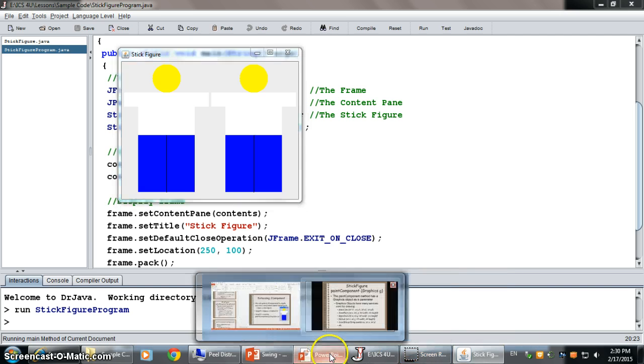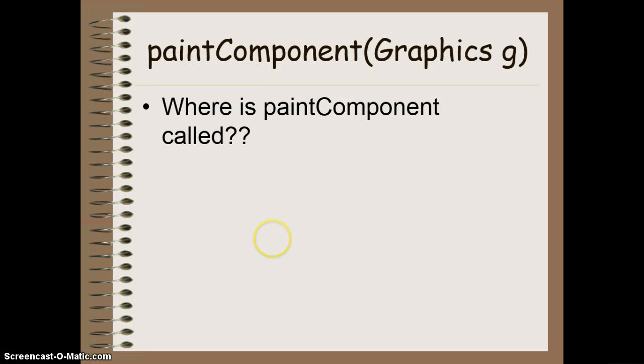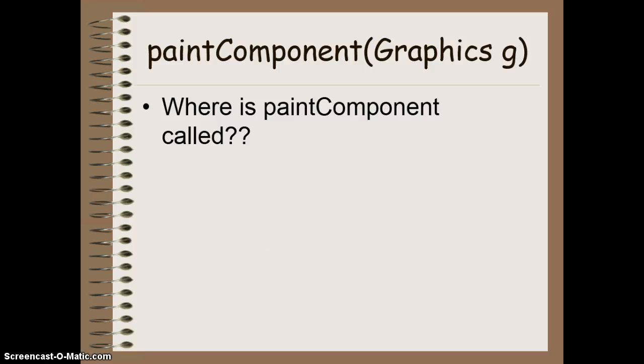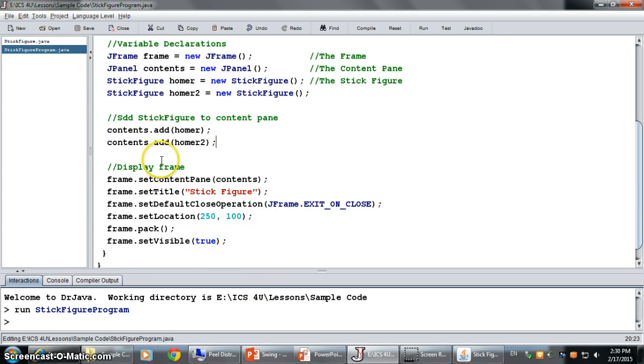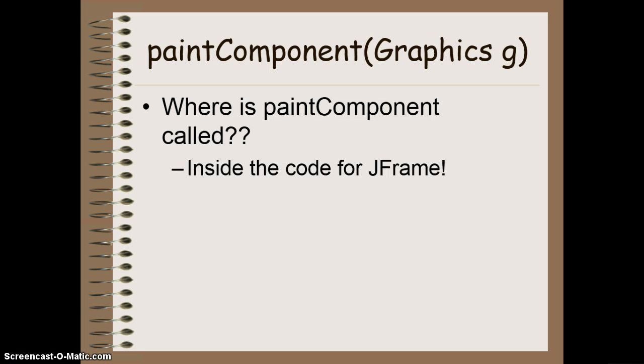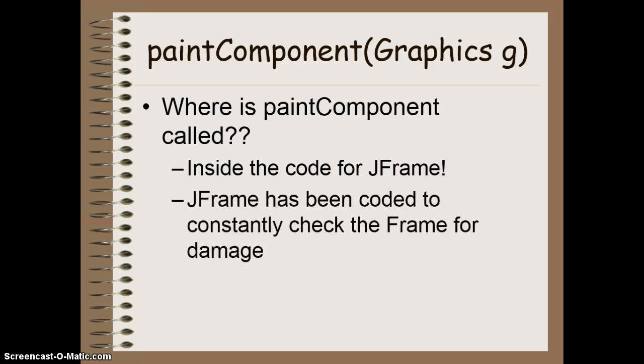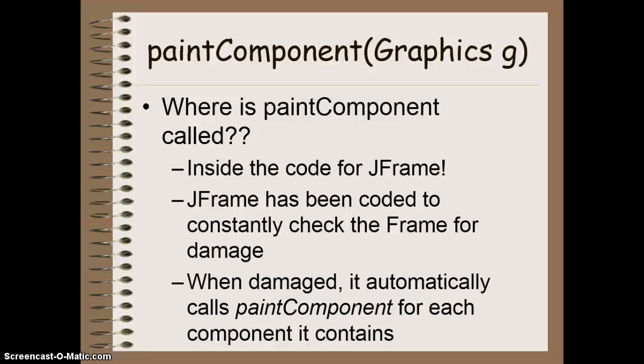The last thing I want to sort of mention here. Is you'll notice that we have this paintComponent method. But if you go back and look at the code. We don't see it being called anywhere. So I've got this method here that I've created called paintComponent. And I need to use it to paint my screen. But I haven't called paintComponent anywhere in my main program. So how is it getting used? How am I getting this component being painted if I never actually called the method paintComponent? Well the answer to that question is that it's sort of hidden from us. It's inside the code for the JFrame. The JFrame itself, if you were to look at its code and open it up. Has been coded to constantly check the frame for damage. So in other words if it's being resized. Or if another window gets dragged over top of it. Or anything like that. Then it needs to fix itself or redraw itself over again. And when it redraws itself. It automatically calls the paintComponent method. For each and every component that it contains inside of its window. So although we don't see where paintComponent method is being called. It is in fact being called inside of the code for the JFrame.